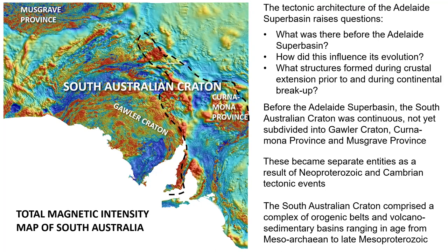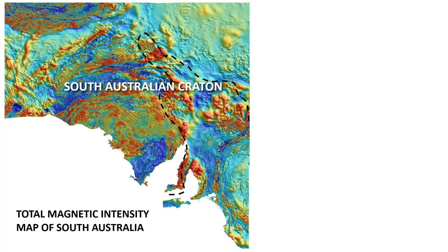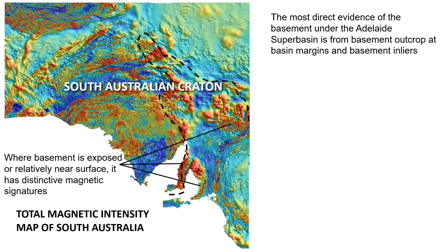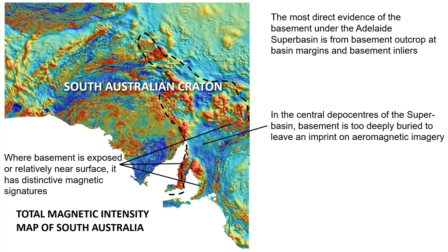The South Australian craton comprised a complex of orogenic belts and volcano-sedimentary basins ranging in age from Mesoarchaean to late Mesoproterozoic. The most direct evidence of the basement underneath the Adelaide Superbasin comes from basement outcrops at basin margins and a few basement inliers. Where the basement is exposed or relatively near surface, it has quite distinctive magnetic signatures. But in the central depot centres of the Superbasin, the basement is much too deeply buried and we don't see any imprint on the aeromagnetic imagery.